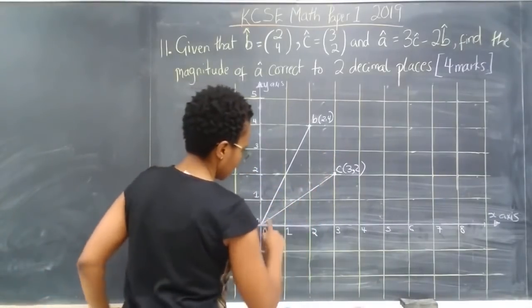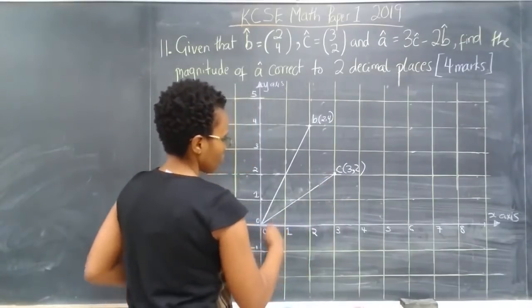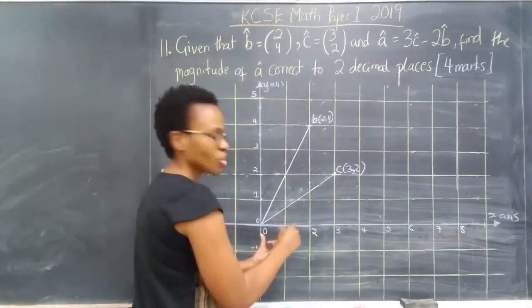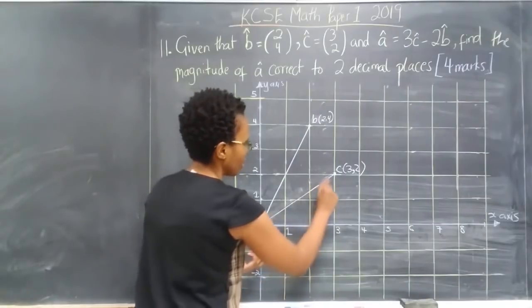So that's our vector C, and if we're asked for the magnitude again, we'd also measure the distance from here to here.